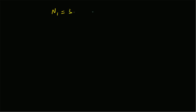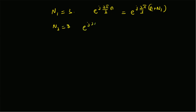To summarize the individual periods: N₁ = 3 means e^(j·2π/3·n) = e^(j·2π/3·(n + N₁)) for any multiple of N₁. Similarly, N₂ = 8 means e^(j·3π/4·n) = e^(j·3π/4·(n + N₂)) for any multiple of N₂.